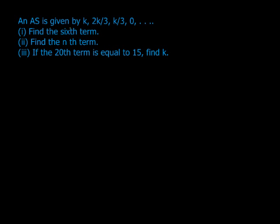First they give us what they call AS, which is just short for arithmetic sequence. It's given by k, 2k divided by 3, k divided by 3, 0, etc.